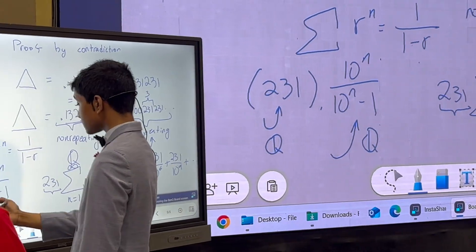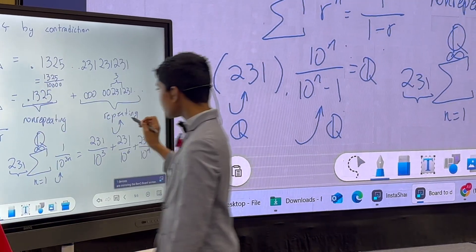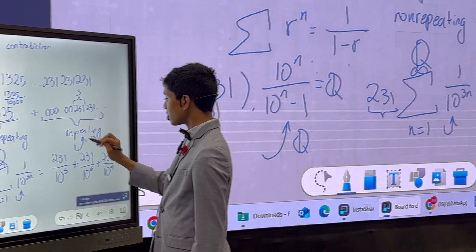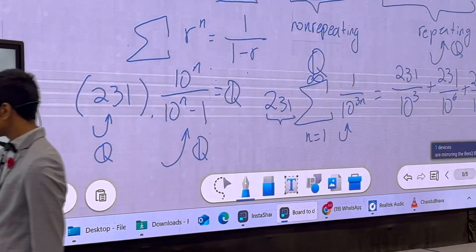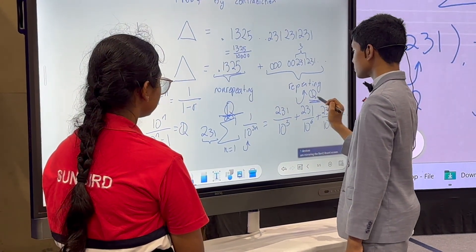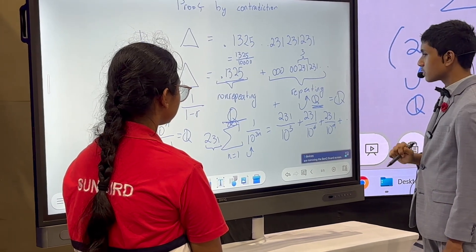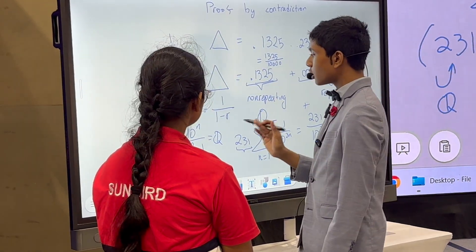And of course, a rational times a rational is another rational, which means that the repeating part can also be written as a rational number. But that means the non-repeating part is rational, the repeating part is rational. Their sum is also a rational number. And so, we've come to a contradiction.